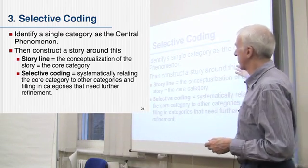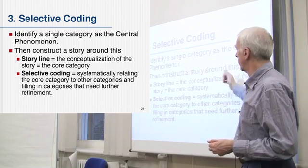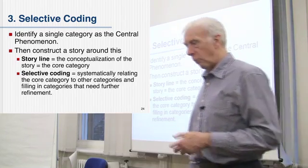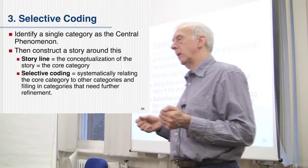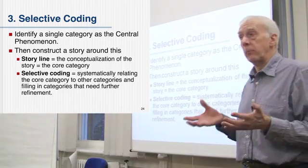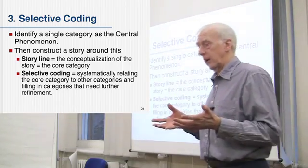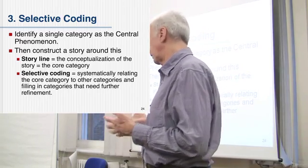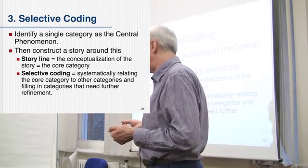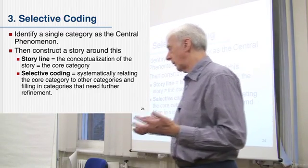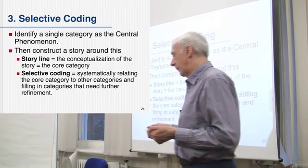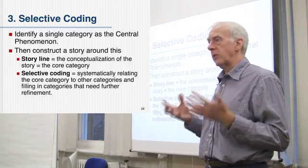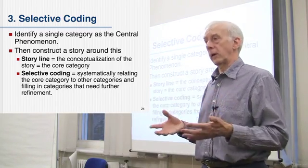So you can construct a story around it — they actually talk about this idea of a storyline around the core category. And it might be a very simple idea. Back to the Moira and Smith example, the idea of women who've been sexually abused: the core idea here might be simply dealing with their own feelings.